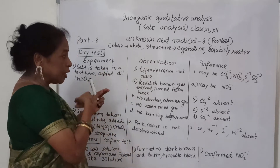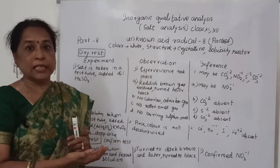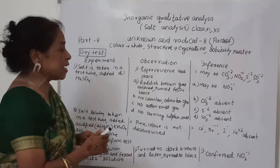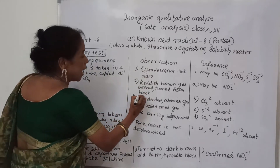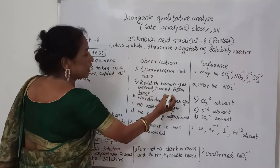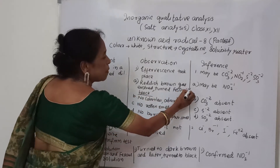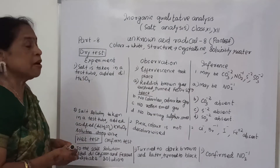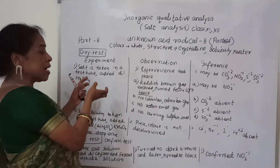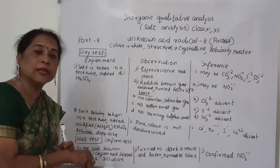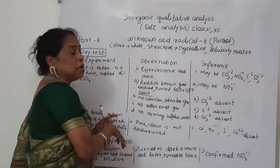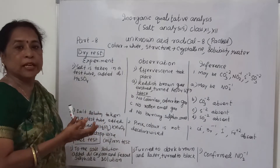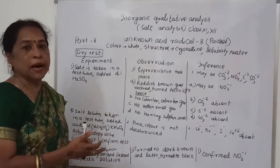Out of these, I observe a reddish-brown gas that evolved and turned the ferrous sulfate solution black. When I pass the reddish-brown gas through the ferrous sulfate solution in a test tube, it turns black. That means it is maybe nitrite, NO₂⁻.